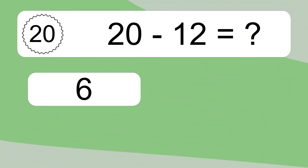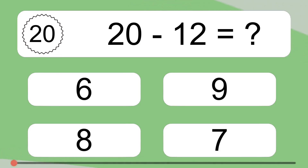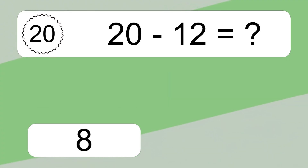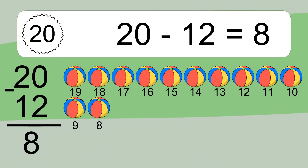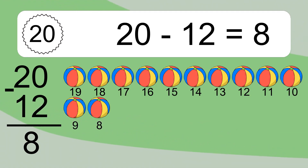20 minus 12 equals what? 20 minus 12 equals 8. Let's count it. 19, 18, 17, 16, 15, 14, 13, 12, 11, 10, 9, 8.